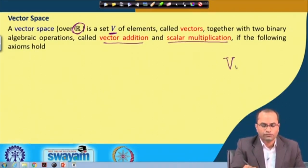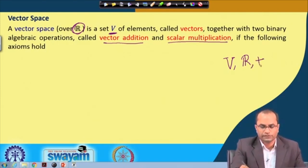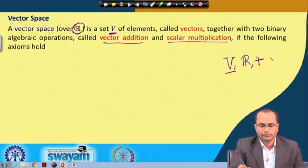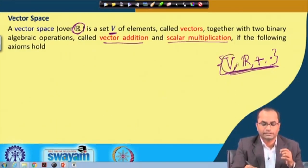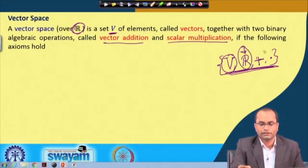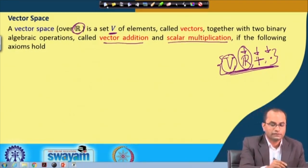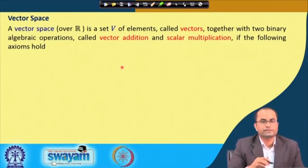We have the set V, another set which is the set of real numbers, vector addition defined on V, and scalar multiplication. We need to define these four things to define this vector space: the main set V, a set of real numbers (or complex numbers), and two algebraic operations — vector addition and scalar multiplication. Having all these, we call V a vector space when the following axioms hold.